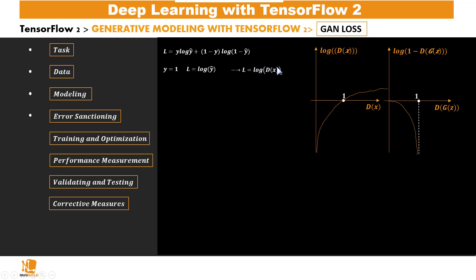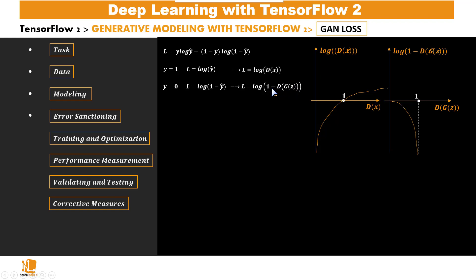When y equals 0 — meaning the input is coming from the generator, so it's fake data — y=0 removes the first term and we're left with log(1 - y). The loss then equals log(1 - D(G(z))). Here our input x comes from the generator, which takes input from the z distribution. So we have log(1 - D(G(z))), and this is what that function looks like.